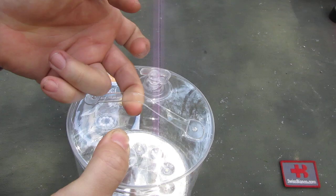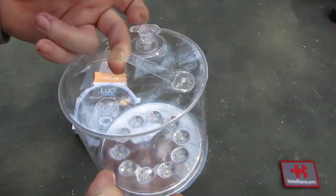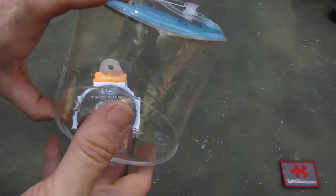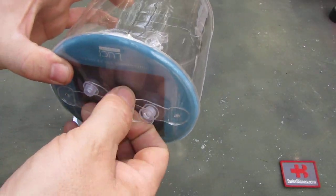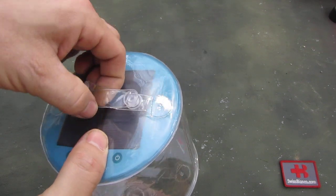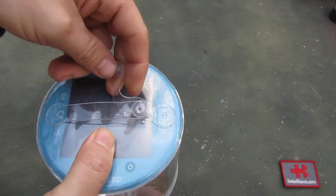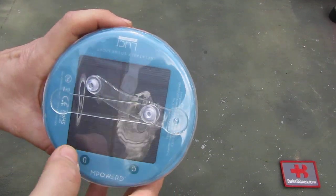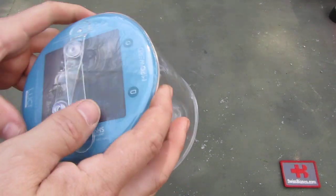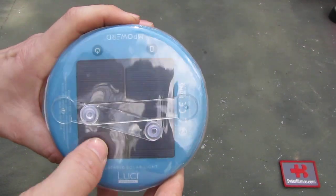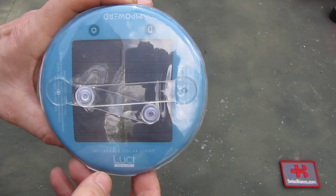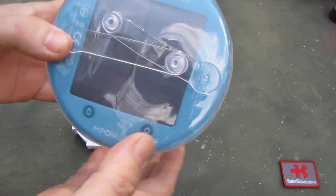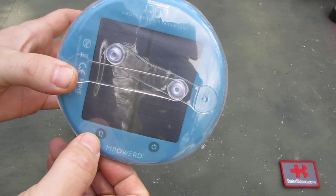Then we have here a loop that you can hang it. Inside we see the 10 LEDs. As we flip it over, we have another loop. This one is adjustable. We can put this and this together so we have a bigger loop there. We see the solar panel and we have the name of the company.